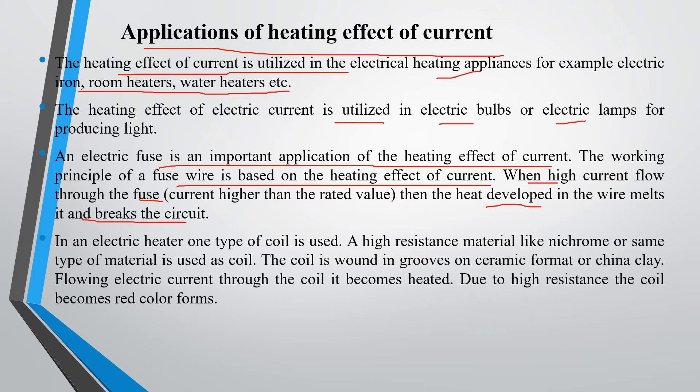In an electric heater, one type of coil is used. A high resistance material like nichrome or similar metal is used as coil. The coil is formed in grooves and ceramic form and power chain of clay. When electric current flows through the coil, it becomes heated. Due to high resistance, the coil becomes red hot.